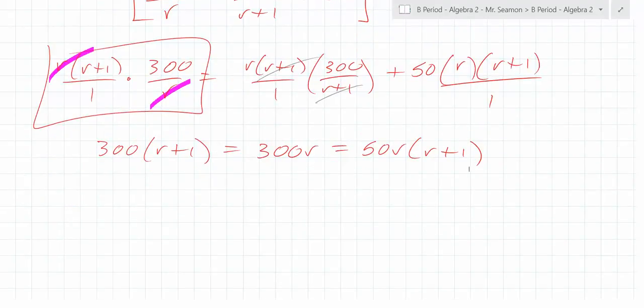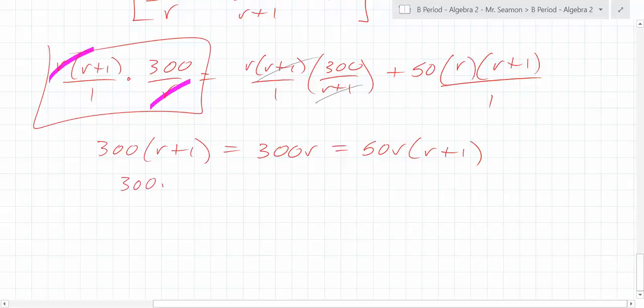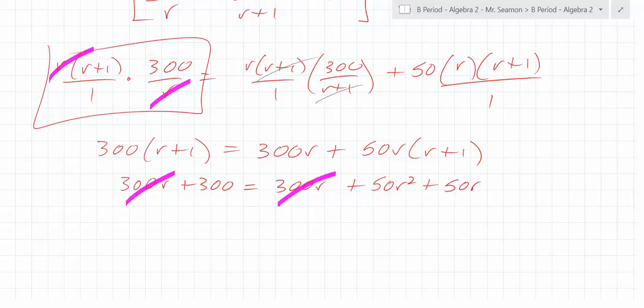At this point, what do you have to do unfortunately? You have to distribute. 300r plus 300 equals 50r squared plus 50r. Hey, something nice is happening. What do you get? That's 50r. What cancels from both sides? 300. That goes away. Is that cool? Yeah. That's nice.